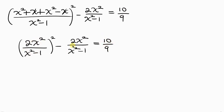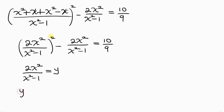Notice these two expressions look very much alike, so we can introduce a second substitution: let y = 2x²/(x²-1). That means the equation can be written as y² - y = 10/9.